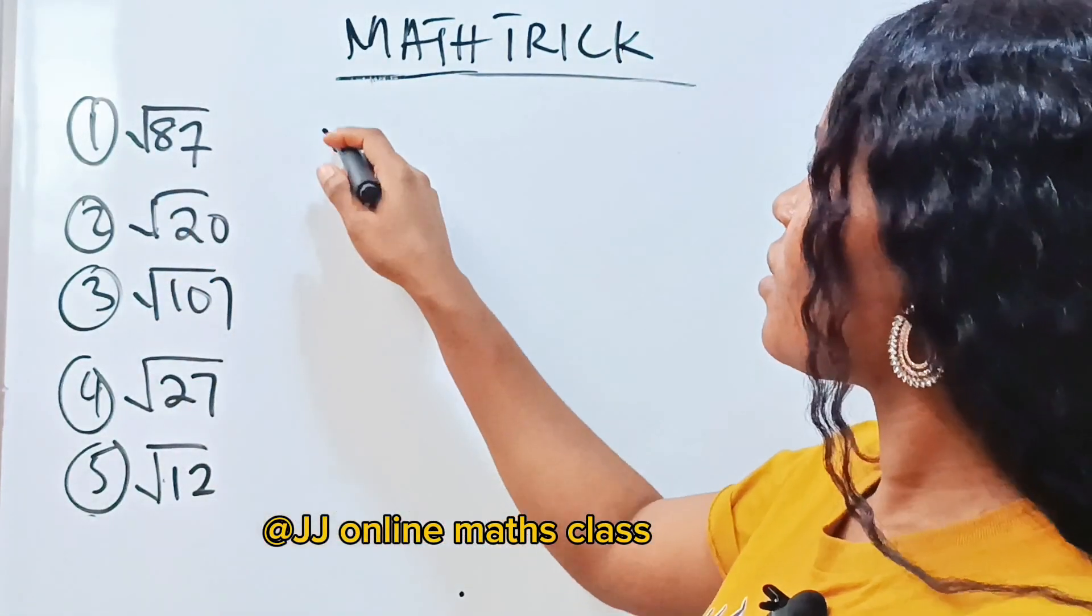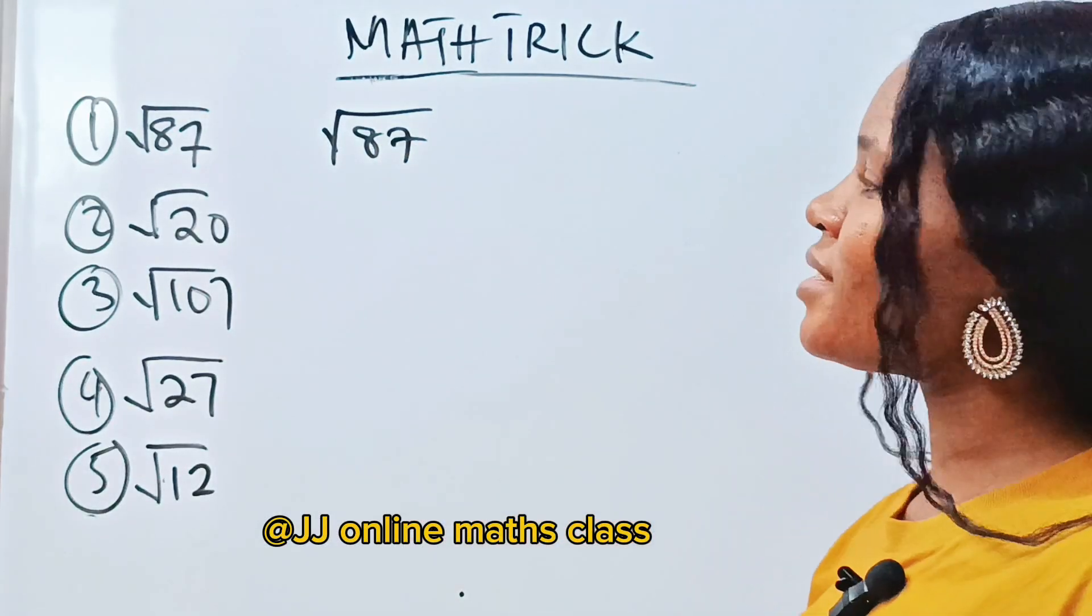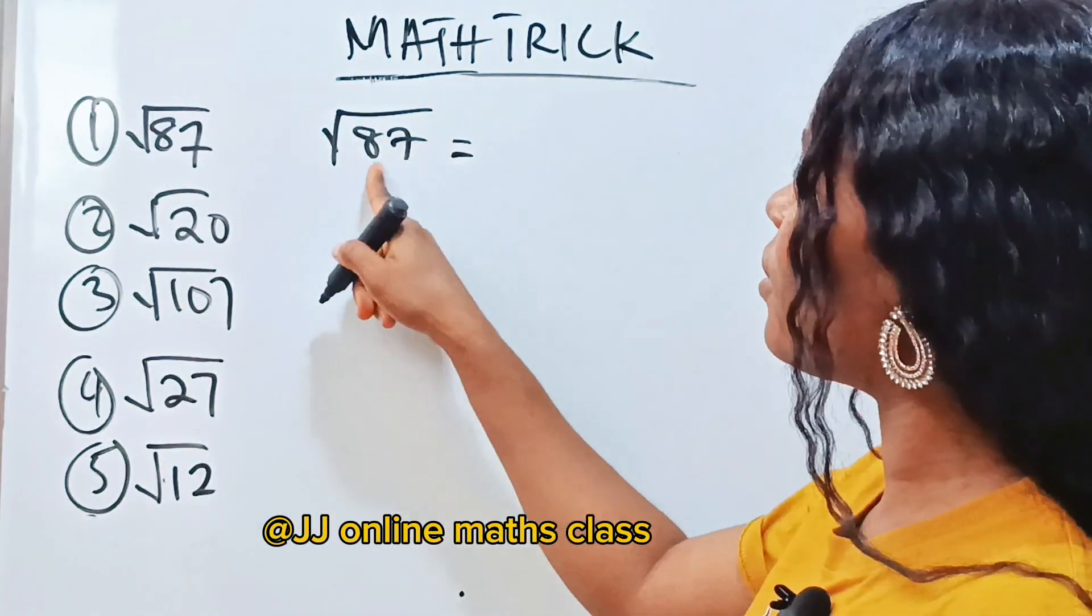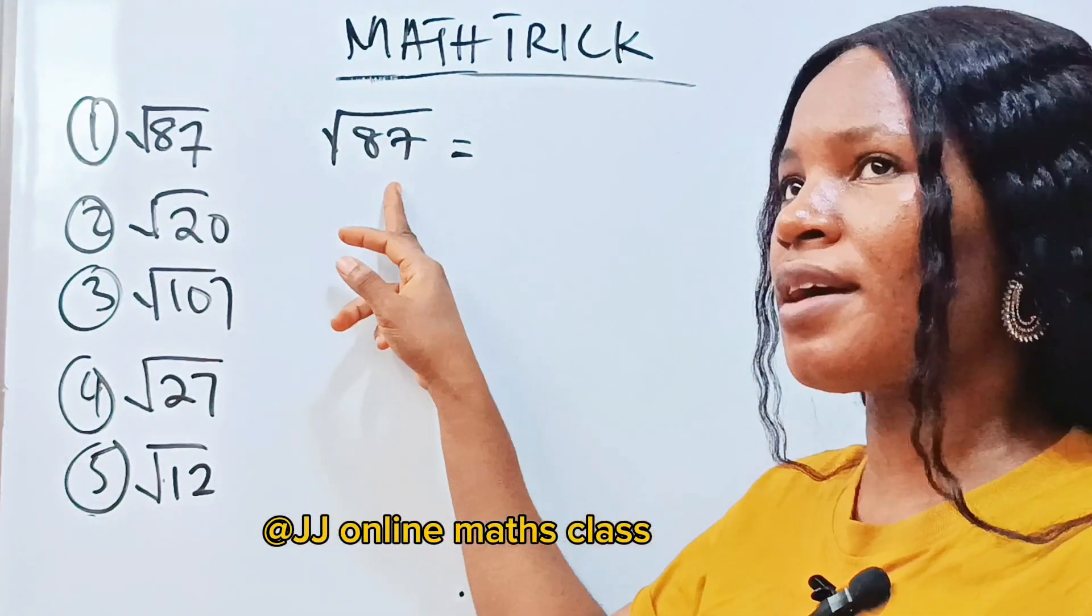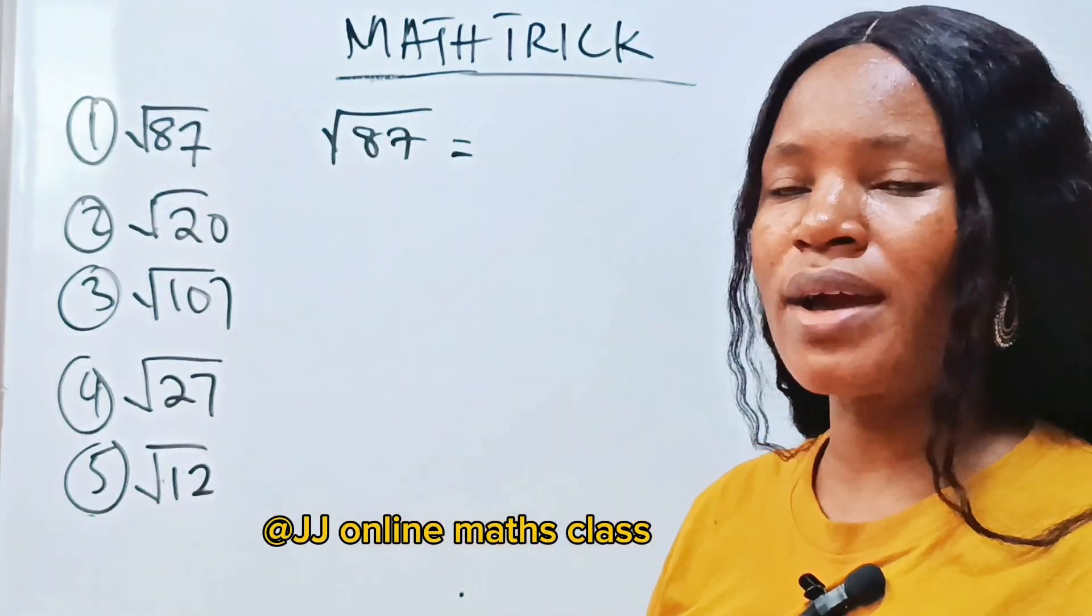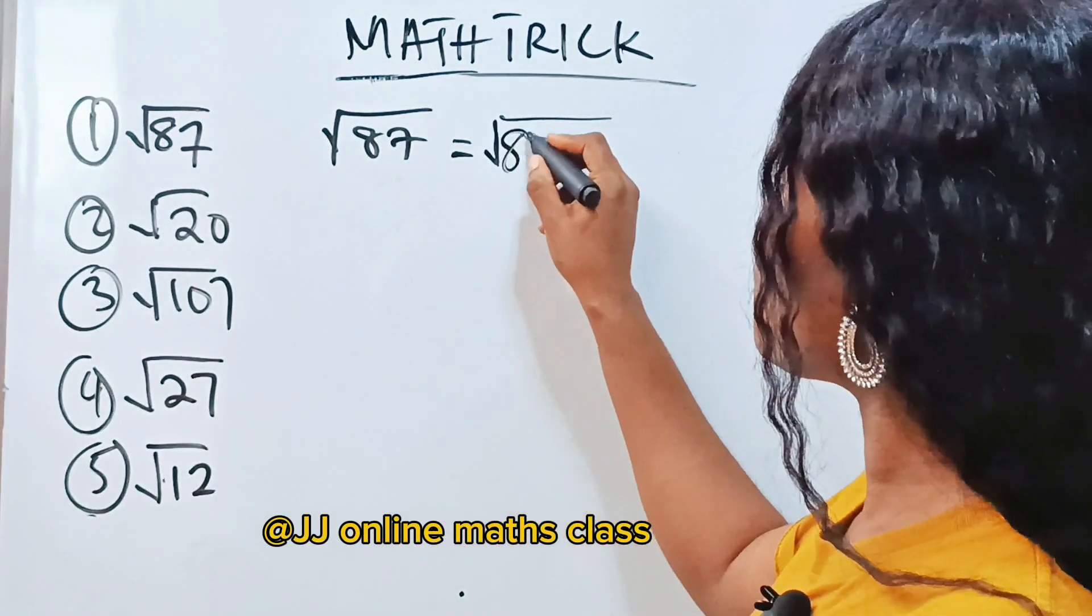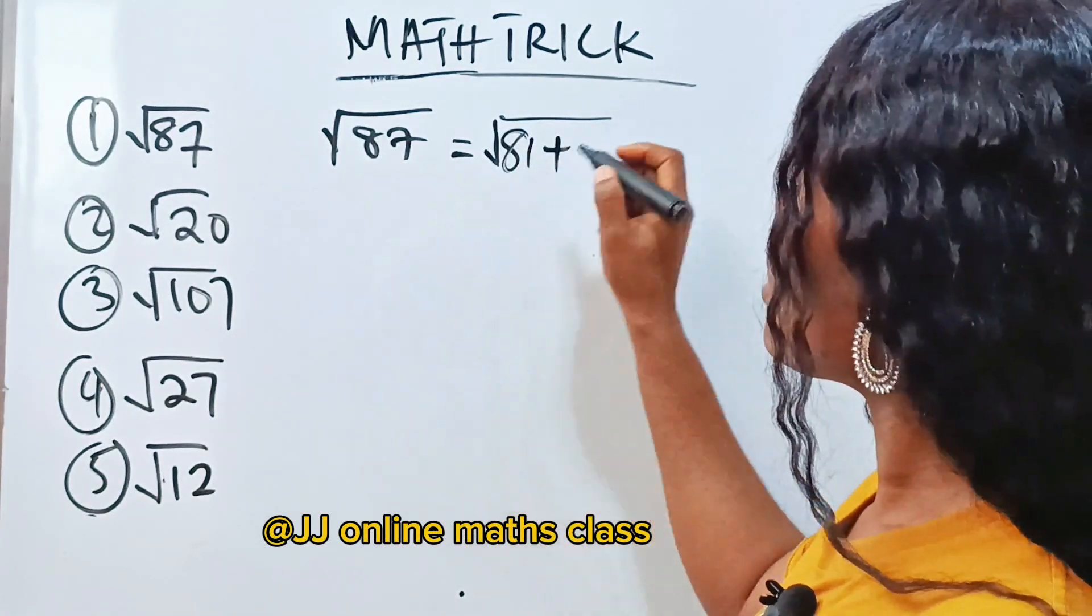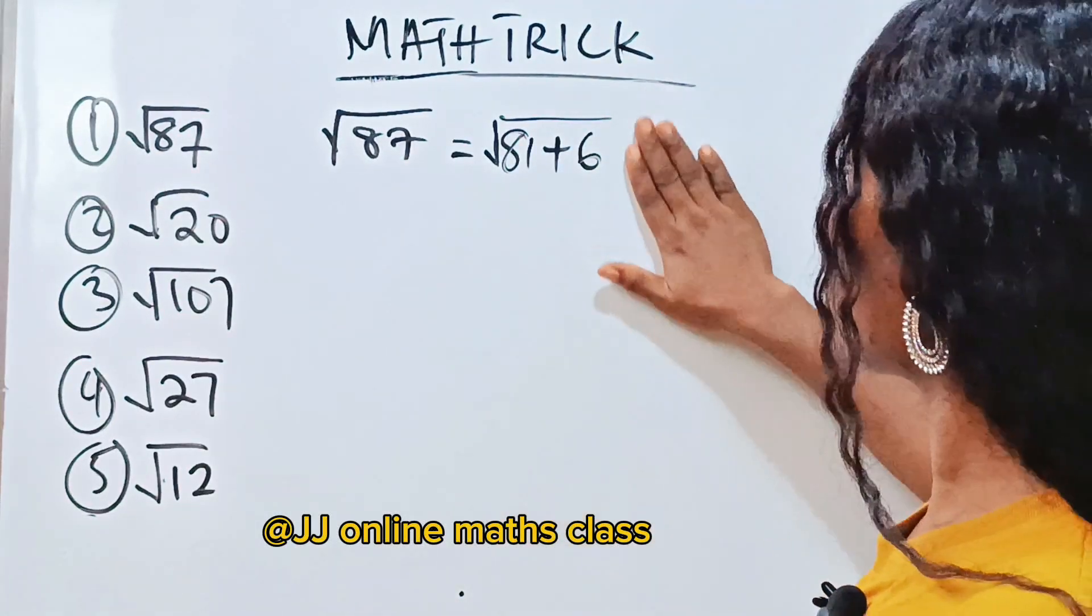Now let's start from the beginning. We are asked to find square root of 87. Now what is the closest perfect square to 87? That should be 81. That should be 81. That is 9 squared is 81. So we have 81 plus 6.